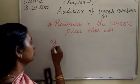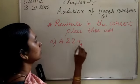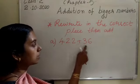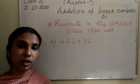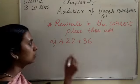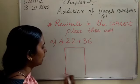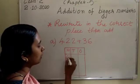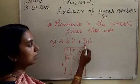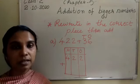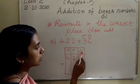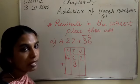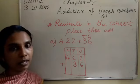Question number 1: 422 plus 36. The first number has 3 digits and the second number only has 2 digits. So we have to draw 3 columns: 100's place, 10's place, and 1's place. The first number is 422. The second number, 36, is a 2-digit number — it only has the 10's and 1's places. So write 3 in the 10's place and 6 in the 1's place.